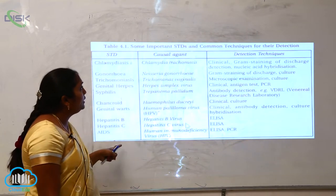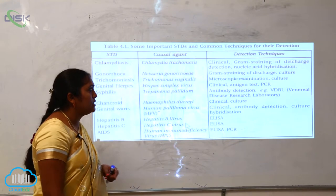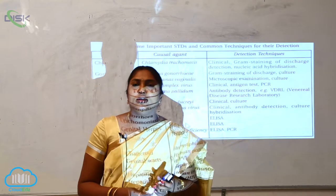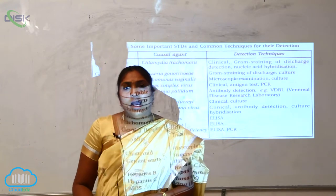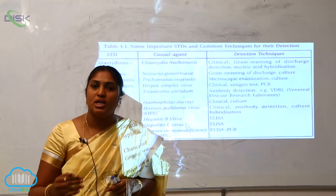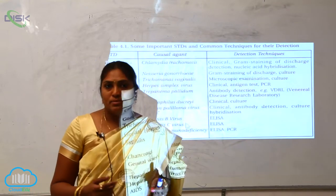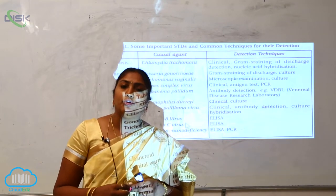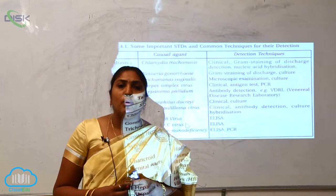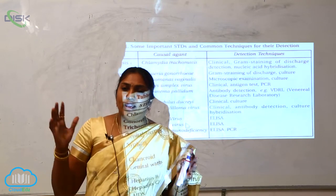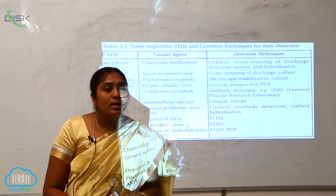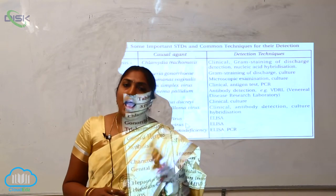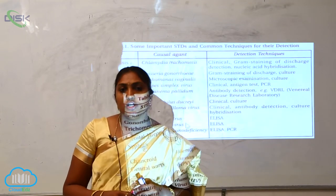These are the different types of sexually transmitted diseases and the common techniques for their detection. The Government of India has been providing extensive immunization programs for infants and children. Children from 0 to 5 years must receive polio vaccination, which the government announces two to three times per year as per the immunization chart and schedule.